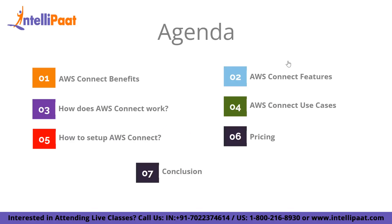Now let us take a look at the agenda for this video. Firstly I'll be talking about AWS Connect benefits, followed by its features, followed by how exactly AWS Connect software as a service works. Then I'll be explaining some of the use cases of AWS Connect, followed by how to set up an AWS Connect instance, followed by pricing models of AWS Connect, and finally the conclusion.